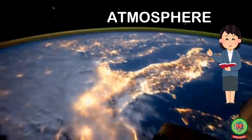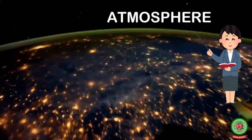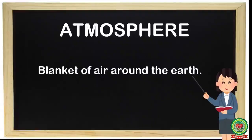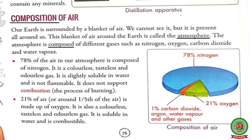And due to this blanket of air, we are able to breathe in. So what is atmosphere? The blanket of air around the earth is called the atmosphere. Now students, the atmosphere is composed of different gases such as nitrogen, oxygen, carbon dioxide and water vapor.